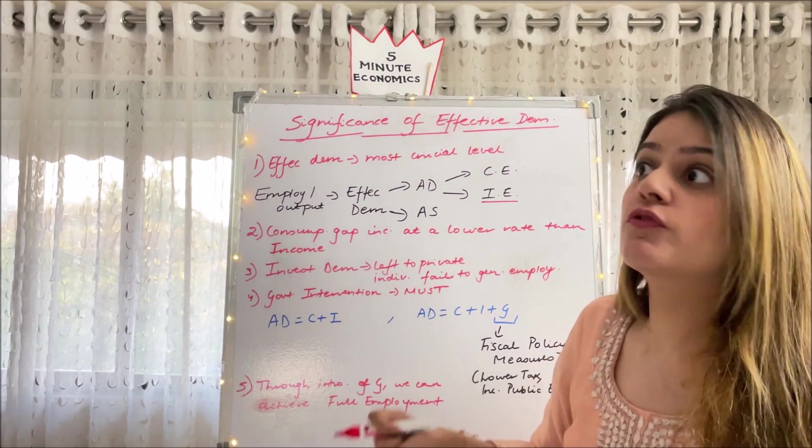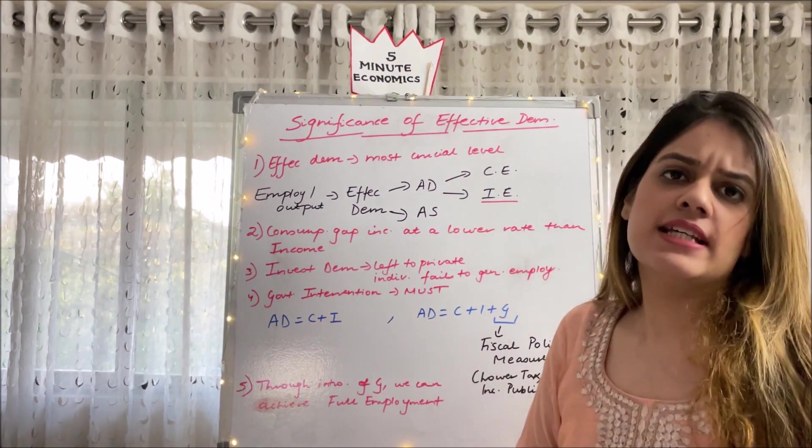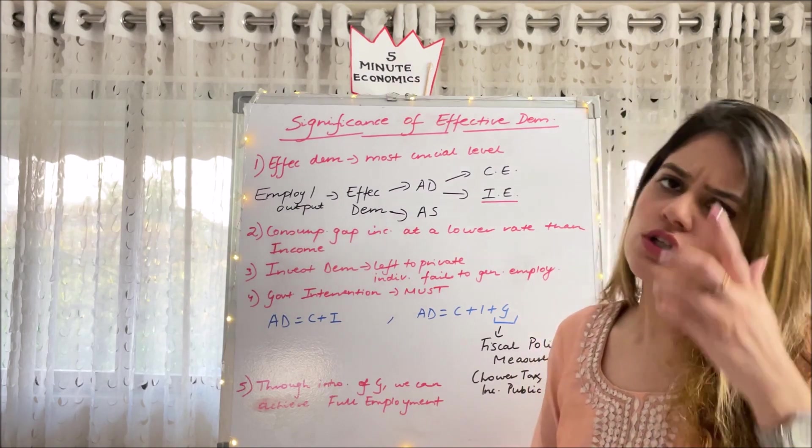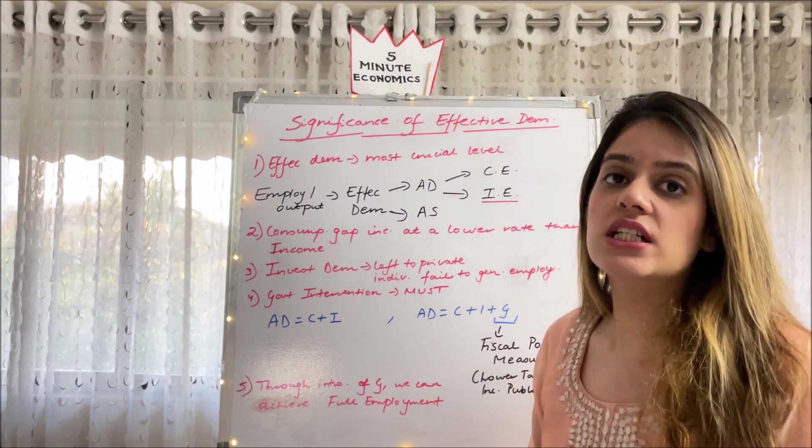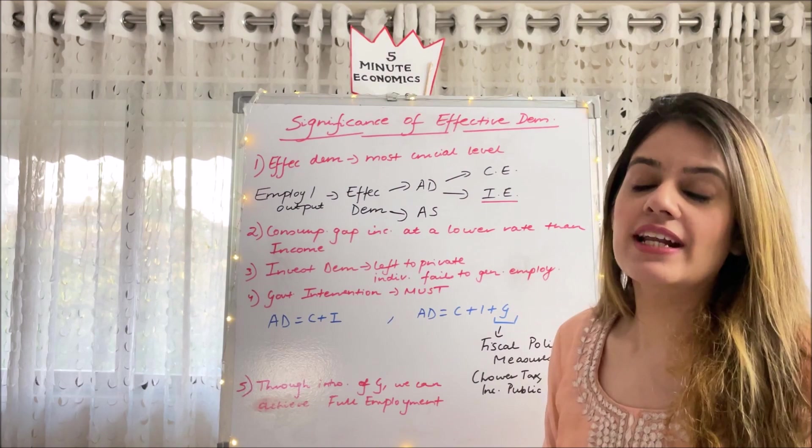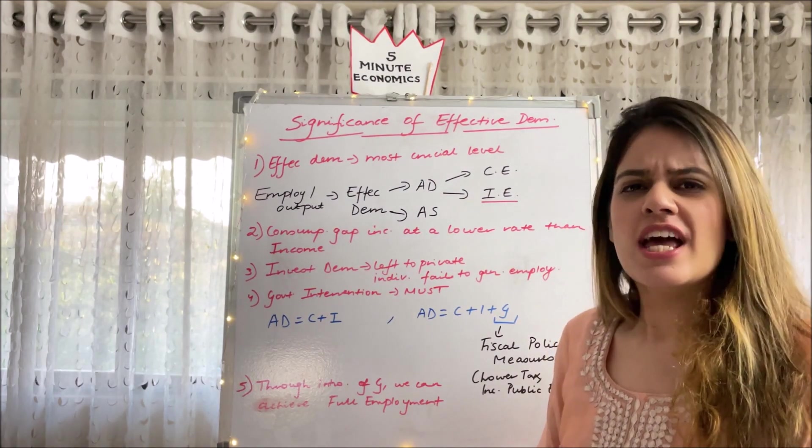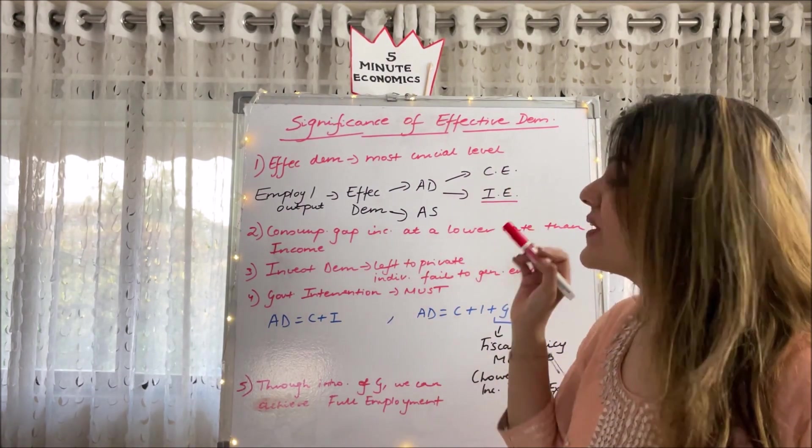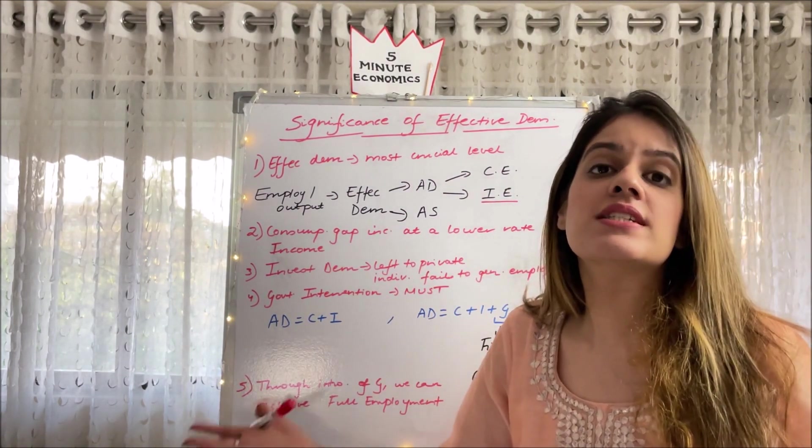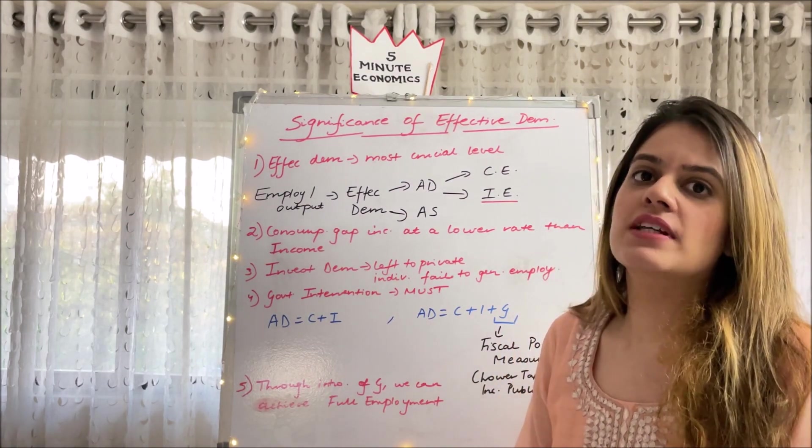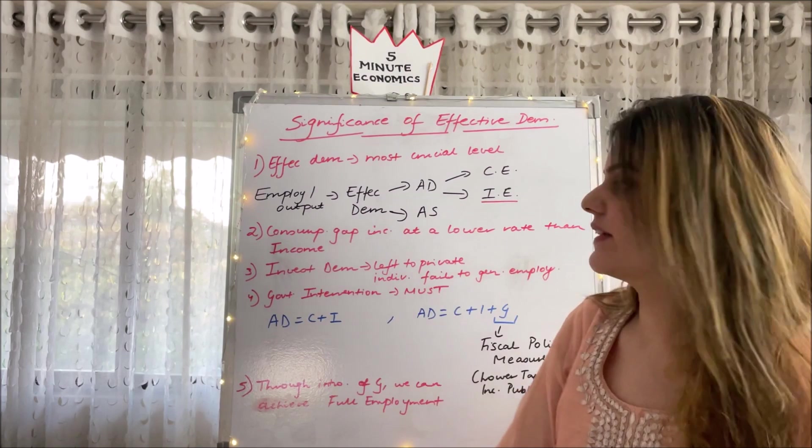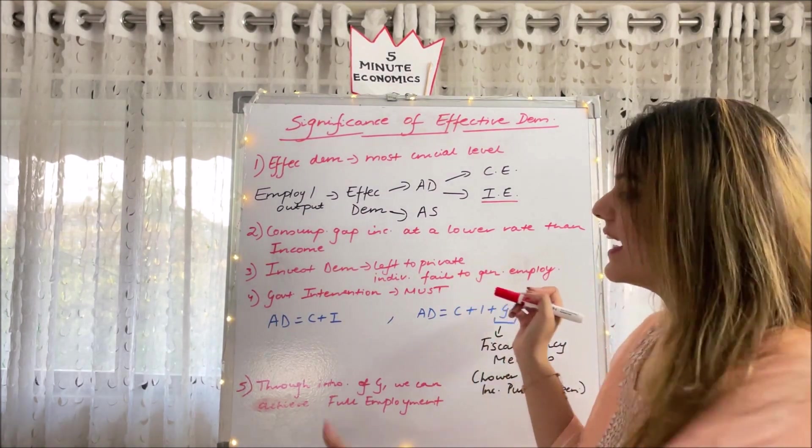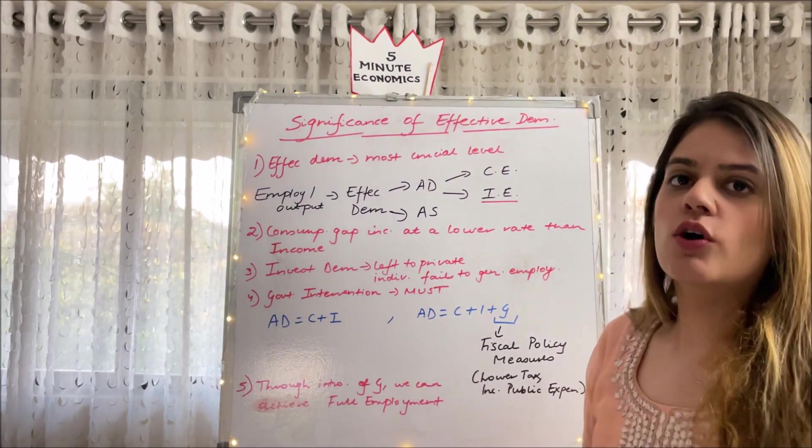So if investment expenditure increases, AD will increase, effective demand will increase, and output employment will increase. So basically, our investment expenditure or investment demand is the main driving force. What is Keynes saying? Keynes is saying if this is left to private individuals, it will fail to generate employment. You remember when we were talking about the classical theory, we said there is no government intervention, right? And that is why Keynes criticized that theory so much. He said government intervention is required.